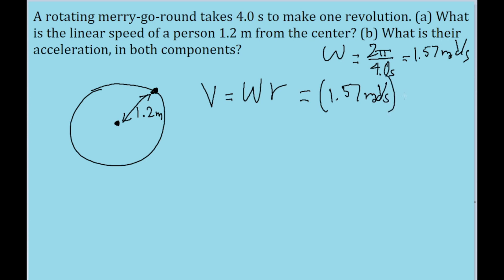And we multiply this by the radial distance from the center, which is given as 1.2 meters. So we just got to put this into our calculator, and we find a linear speed of about 1.9 meters per second. That's the answer for part A.